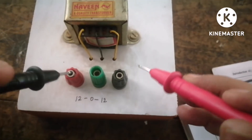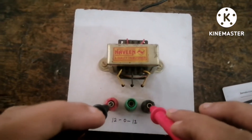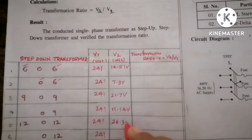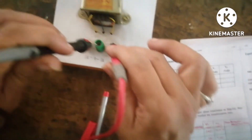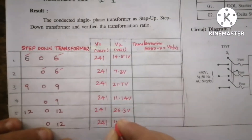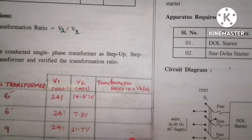In the same manner, I will show how to measure the outputs from the 12-0-12 transformer. Holding the probes across terminals 12 and 12, the meter reading is 26.3 volts. Next, measuring across 0 and 12 — the middle and last terminals — I get 13.4 volts.